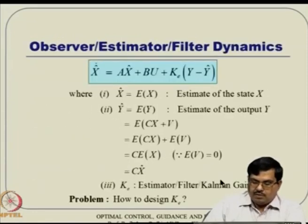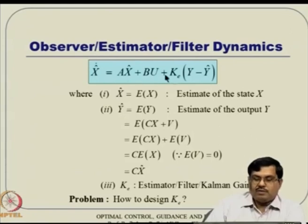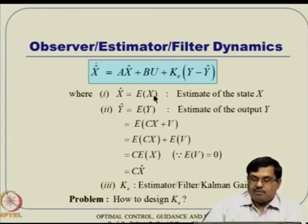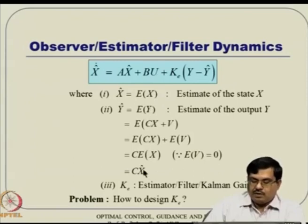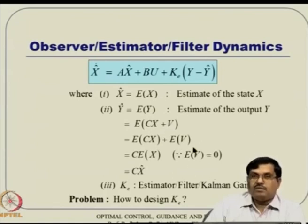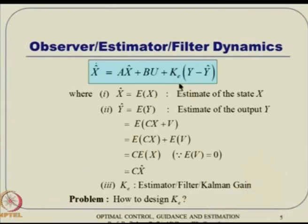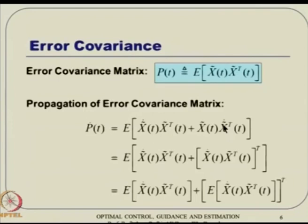The estimator dynamics was taken in the form: x_hat_dot = A*x_hat + Bu + K_e*(y - y_hat), where x_hat is the expected value of x, and y_hat = C*x_hat since the expected value of v is zero. The key question is how to design this Kalman Gain K_e. We defined P(t) as the error covariance matrix and studied its dynamics.